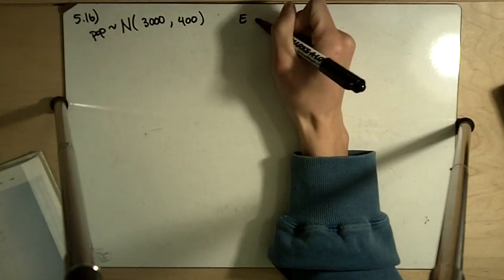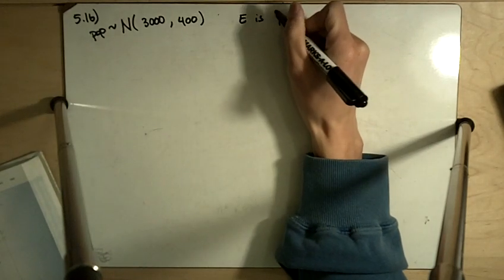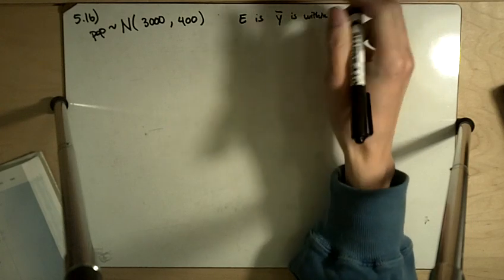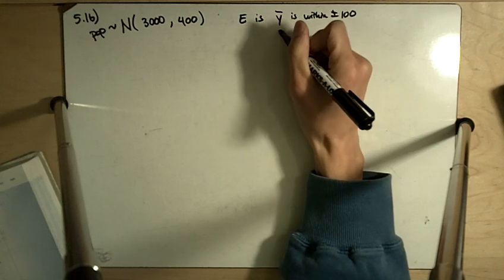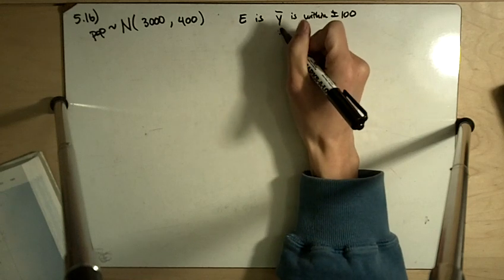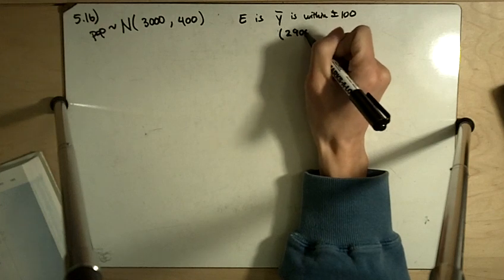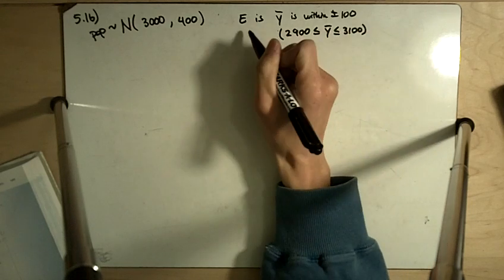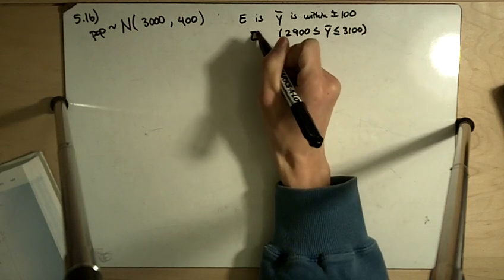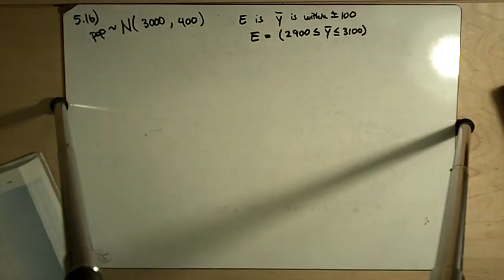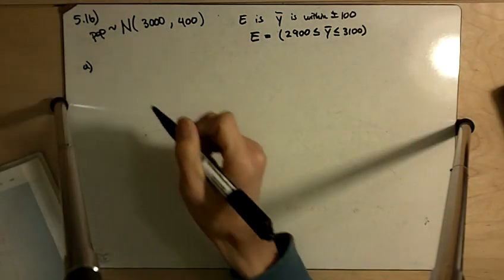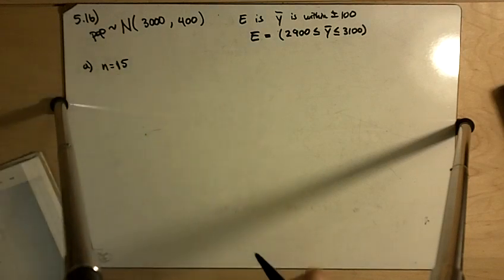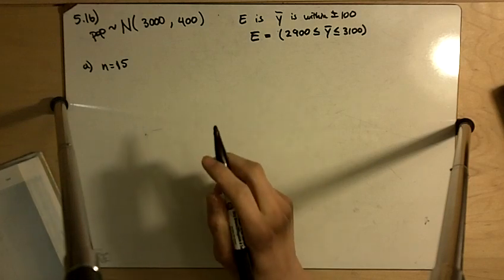Again, event E is Y bar is within plus or minus 100, so basically event E is that Y bar is between 2900 and 3100. And so now we want to know what is the probability of event E if N equals 15 and then later on we want to know what's the probability of event E if N equals 60.